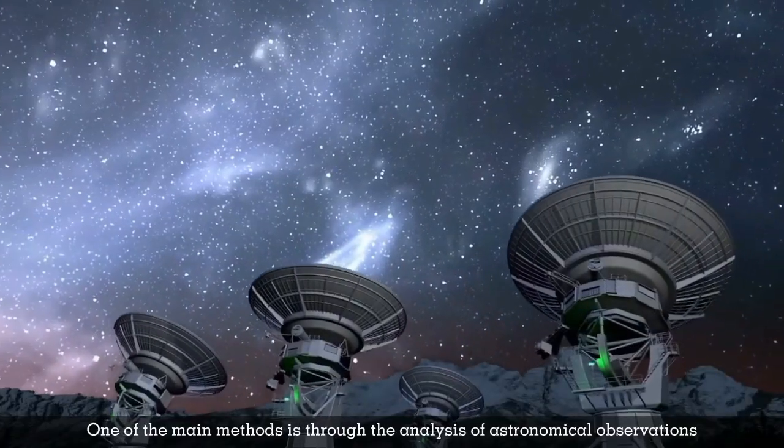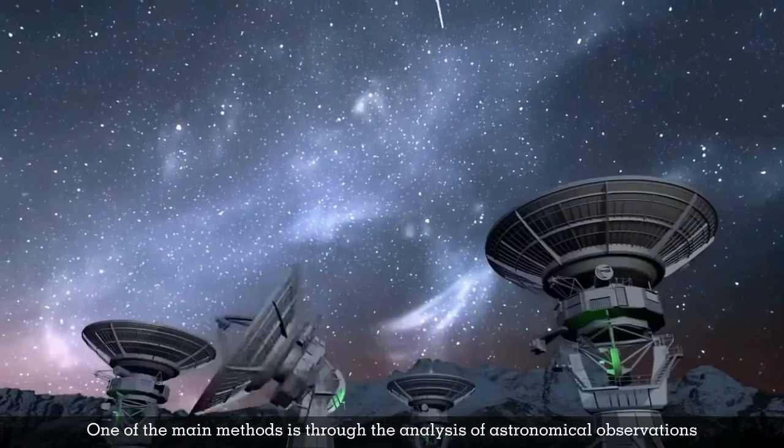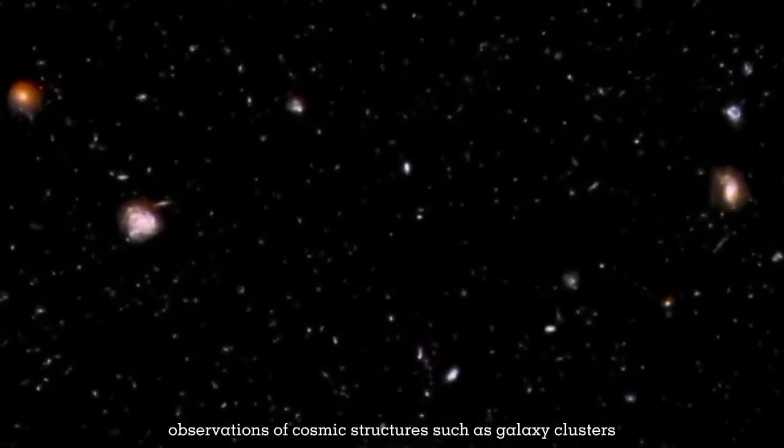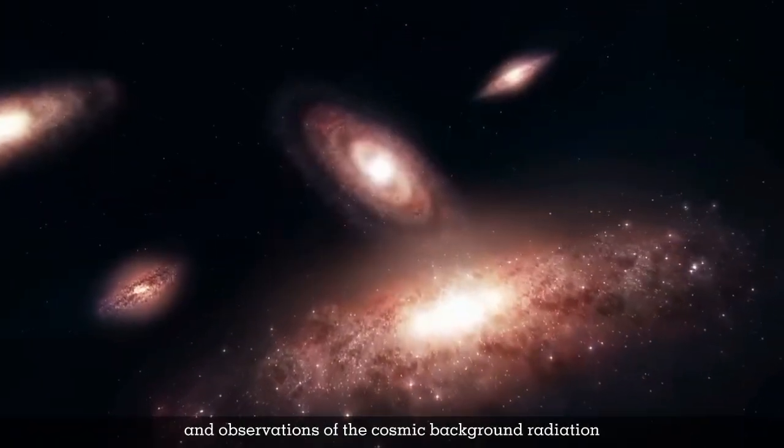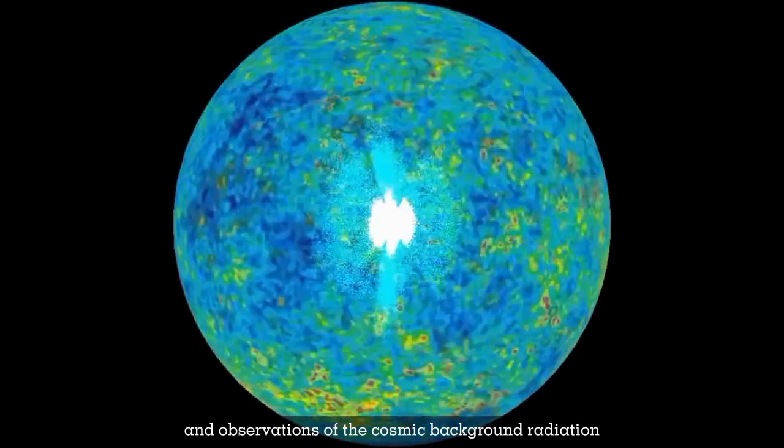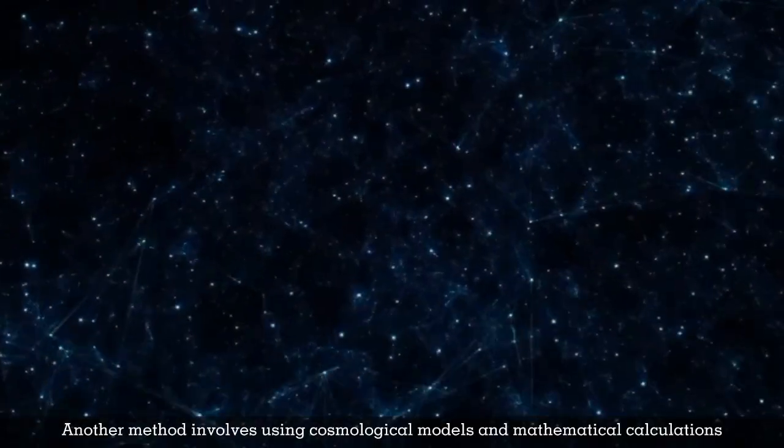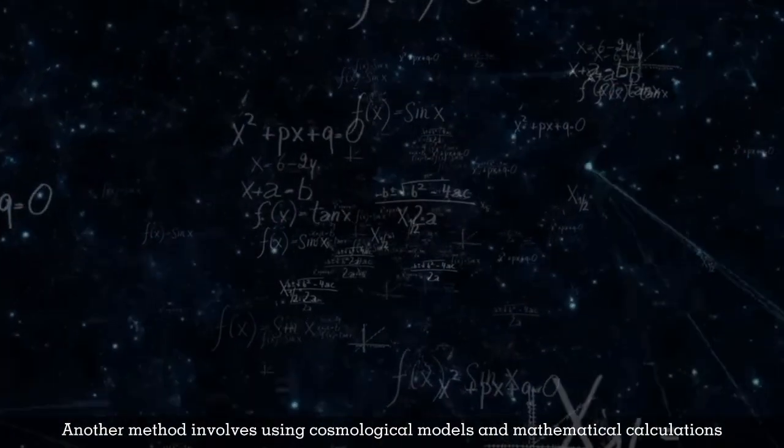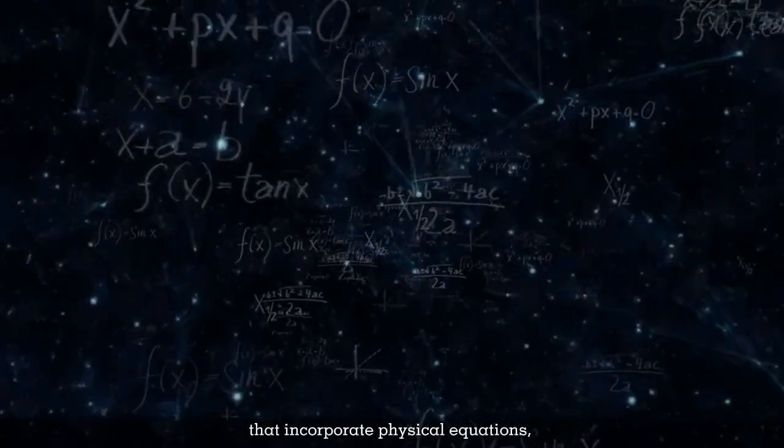One of the main methods is through the analysis of astronomical observations, such as measurements of the redshift of galaxies, observations of cosmic structures, such as galaxy clusters, and observations of the cosmic background radiation.